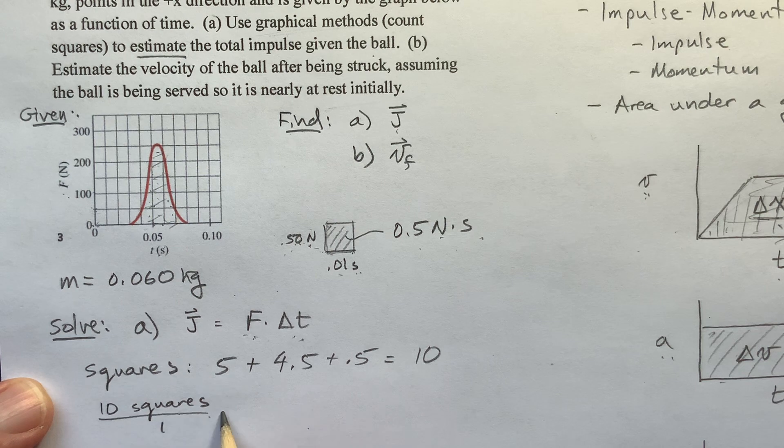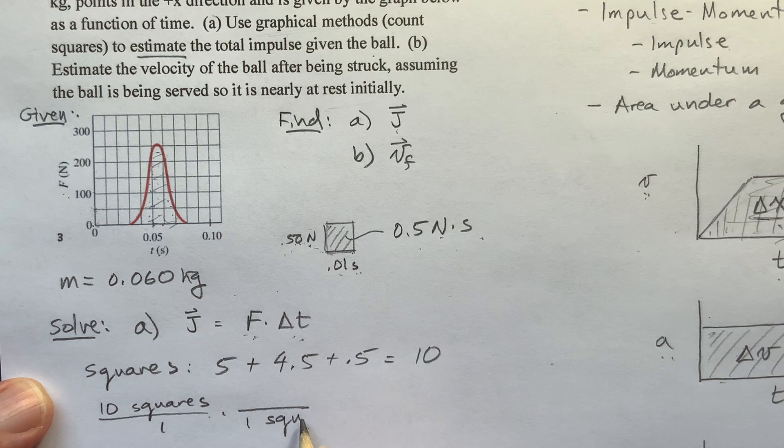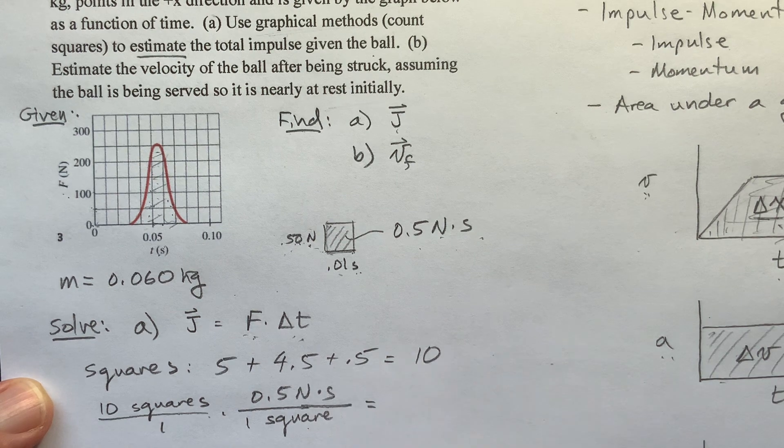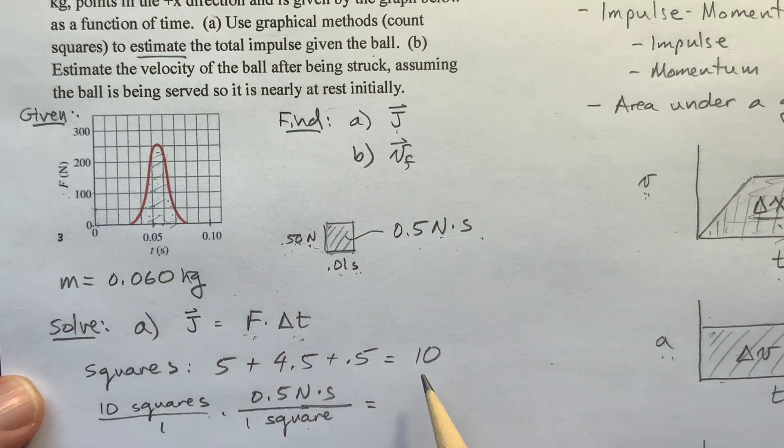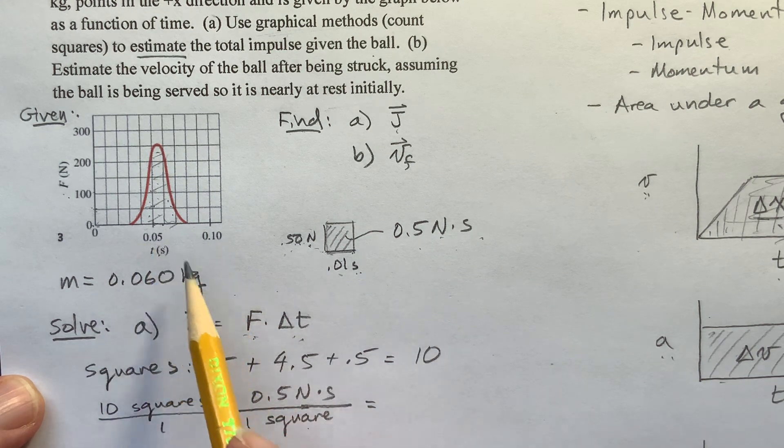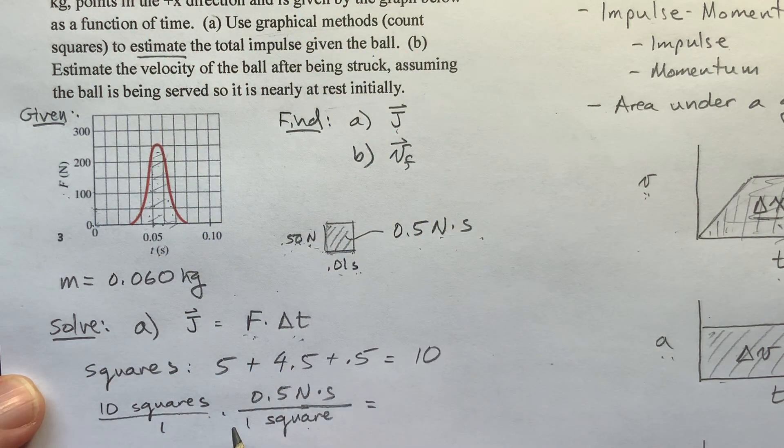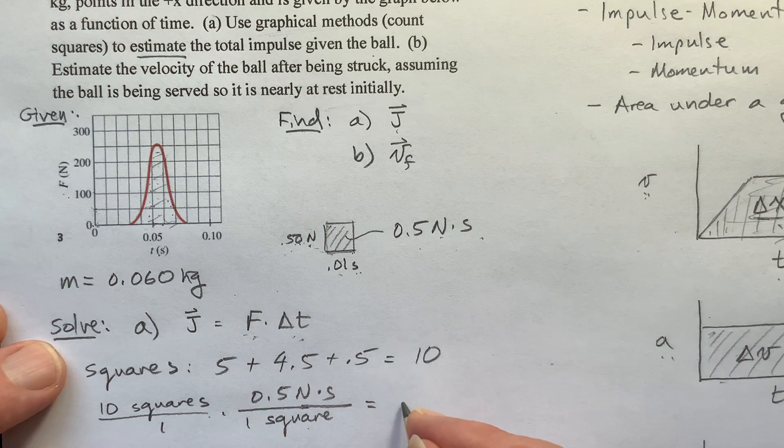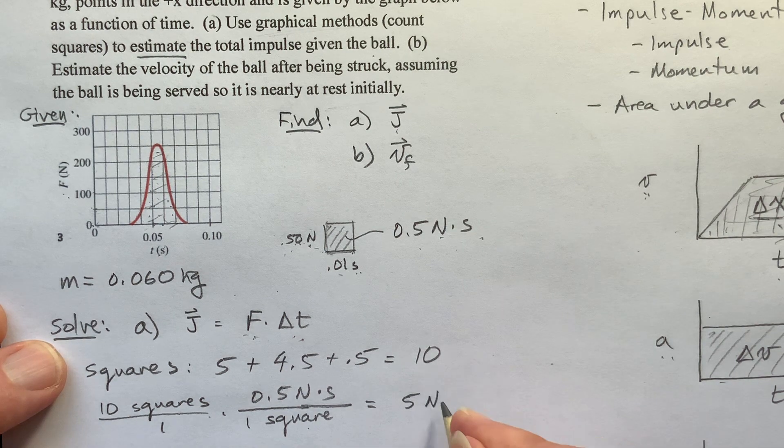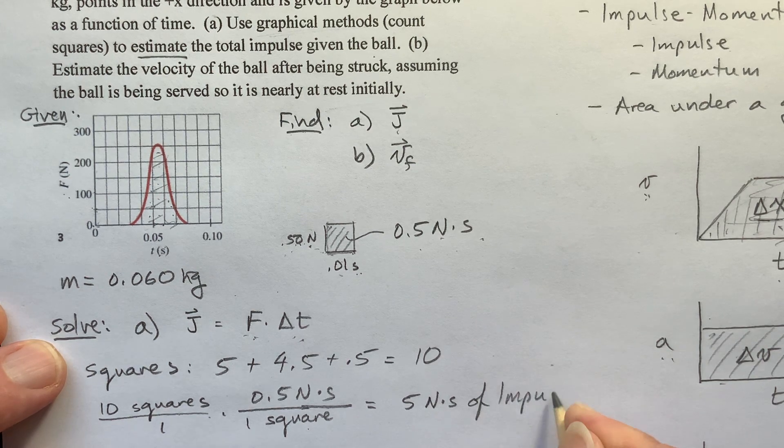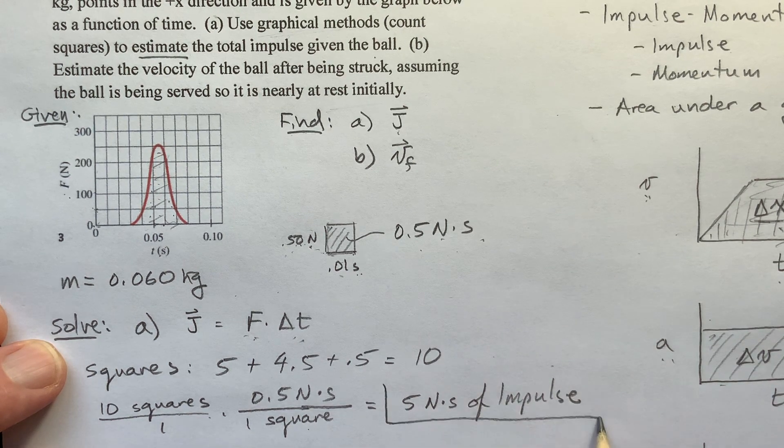So if we have 10 squares, we're estimating that the area underneath here is 10. It might be a little bit less, but that's okay. And we know that one square represents 0.5 newton seconds of impulse. That means that the impulse, the total impulse provided to the tennis ball is 5 newton seconds of impulse. And that's my answer to part A. And it's positive. It's to the right.